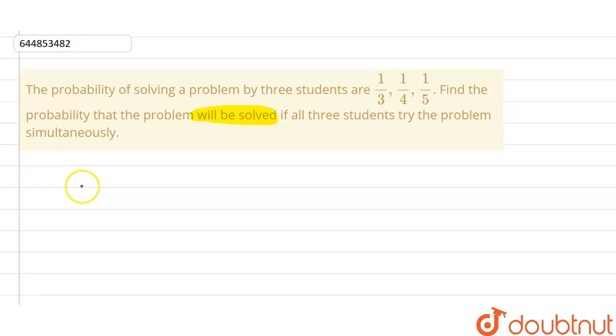Let's suppose A for first student, B for second student and C for the third student. Now, they all three are independent to each other. That means the probability of solving a problem of one does not depend on the other.